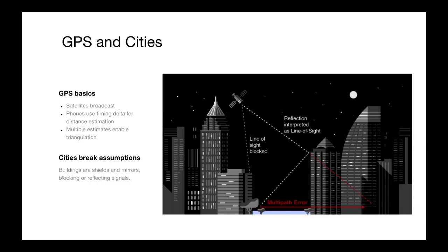It uses very precise timing estimates in order to derive what's called a pseudo range, which tells your phone how far it is from any individual satellite. Once you can see multiple satellites, you can run a process called triangulation, which allows you to use the distance to each of those satellites in order to understand where you are on the earth.